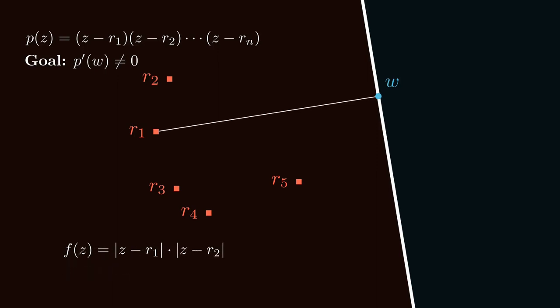Now we'll do the same kind of game, but with a new helper function. This time f of z equals the product absolute value z minus r1 times absolute value z minus r2. So f is now the product of the distances from its input to the root r1 and the root r2.